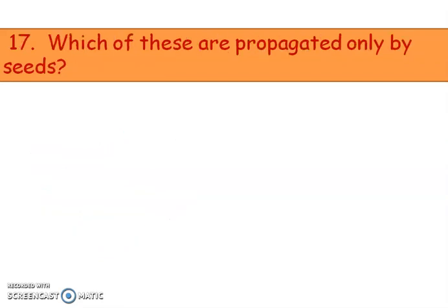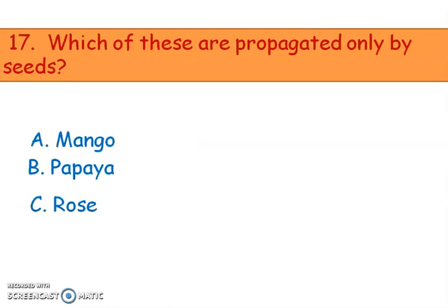Next question: which of these are propagated only by seeds? Options are mango, papaya, rose, and lemon. The right answer is option B, papaya. Papaya is propagated only by seeds. Mango can be propagated by seeds or grafting. Rose is propagated by cutting. Lemon can be propagated by seeds, layering, or grafting.